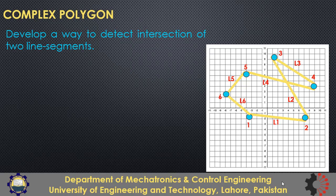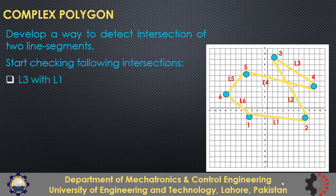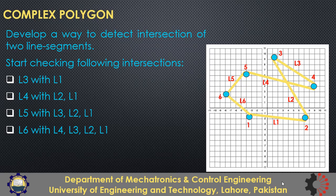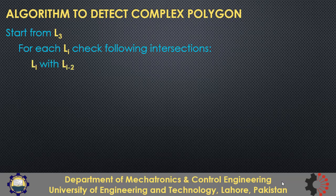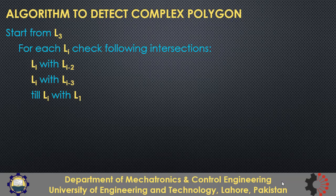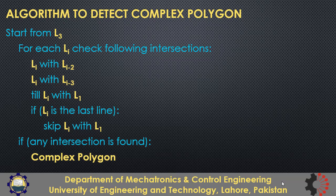The first check should be between line 3 and line 1. Build the algorithm by checking: L3 intersecting with L1, then L4 with L2 and L1, then L5 with L3, L2, and L1, and then L6 with L4, L3, L2, and L1. However, since line 6 is the last line and connects back to line 1, we should not check the last line's intersection with line 1. So the complete algorithm starts with L3 and for each Li checks intersections from Li-2 down to L1, skipping the check with L1 if Li is the last line. If any intersection is found, the polygon is complex.